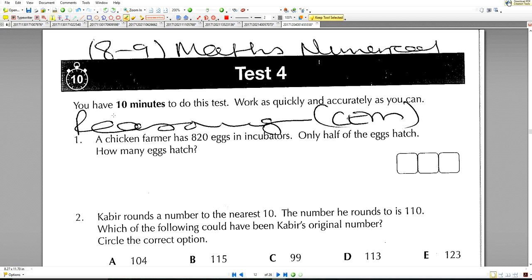Work as quickly and accurately as you can. A chicken farmer has 820 eggs in an incubator. Only half of the eggs hatch. How many eggs hatch? So you have 820, we divide by 2. That'll give you 4, that'll give you 1, that'll give you 0, and that gives us a nice answer of 410.